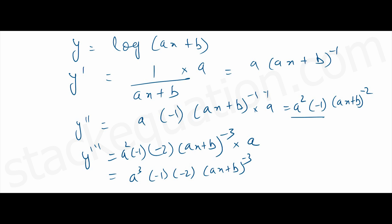Now observe carefully that for the third derivative, it goes one times two, and the exponent of a is three, and the exponent of (ax + b) is minus three. So we can write the generalized expression for the nth derivative, that is: a to the power n, times (ax + b) to the power minus n, times (n minus 1) factorial, because it goes to two for the third derivative.